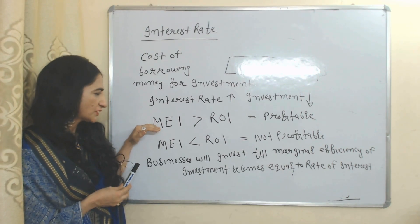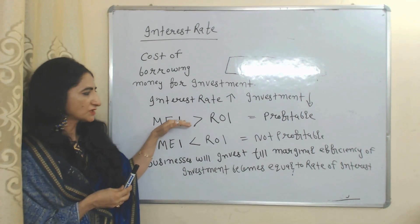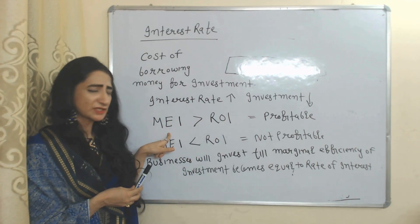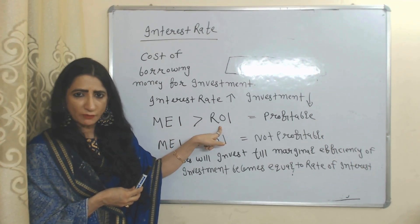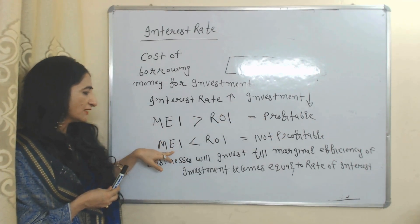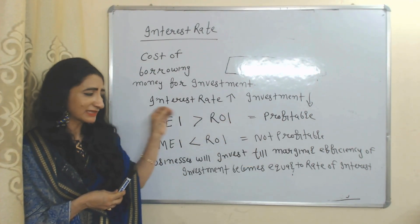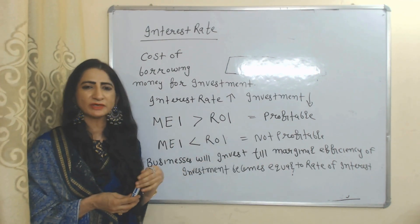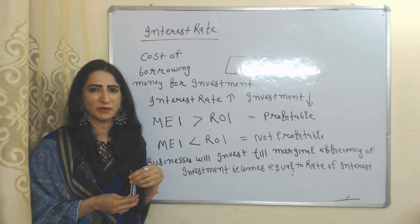Now we compare marginal efficiency of investment and interest rate. If marginal efficiency of investment is more than the interest rate, then investment will be profitable — because marginal efficiency of investment is the return on investment and interest rate is the cost of investment; if profit is more than cost, investment is profitable. On the other hand, if marginal efficiency of investment is less than interest rate, investment is not profitable. That's why businesses try to invest until marginal efficiency of investment becomes equal to the rate of return. This is all about investment function. Thank you so much for watching. Bye, take care.